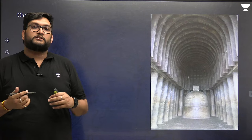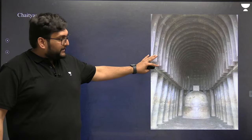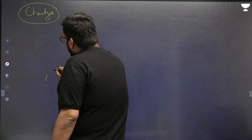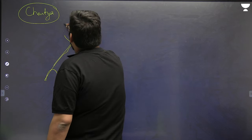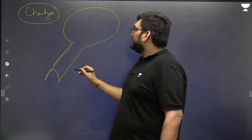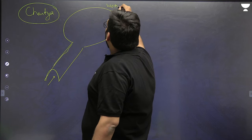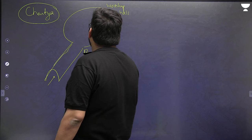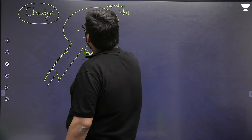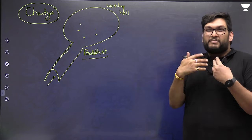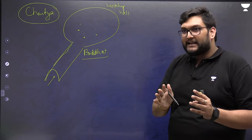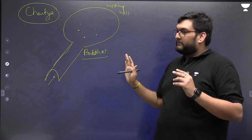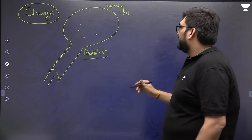Chaityas can be made in different ways, linked to the different forms of Buddhism. The first type is the earliest form — a plain open hall with nothing inside. This is the early Buddhist chaitya from before the second Buddhist council, when there was no split. The monks would sit in the open hall and do prayer. This is the first type of chaitya.